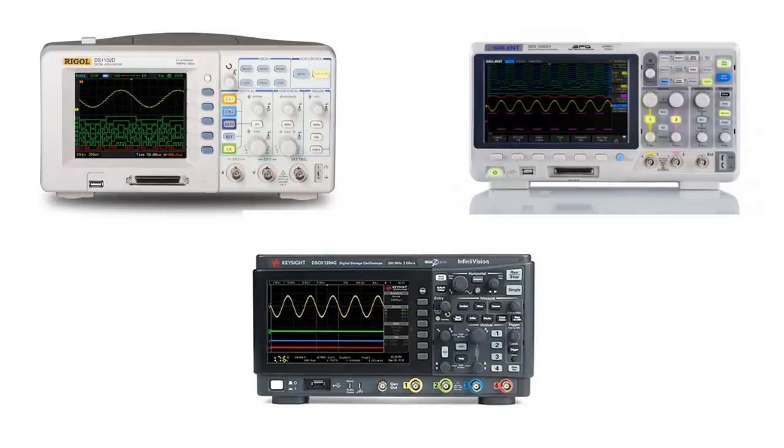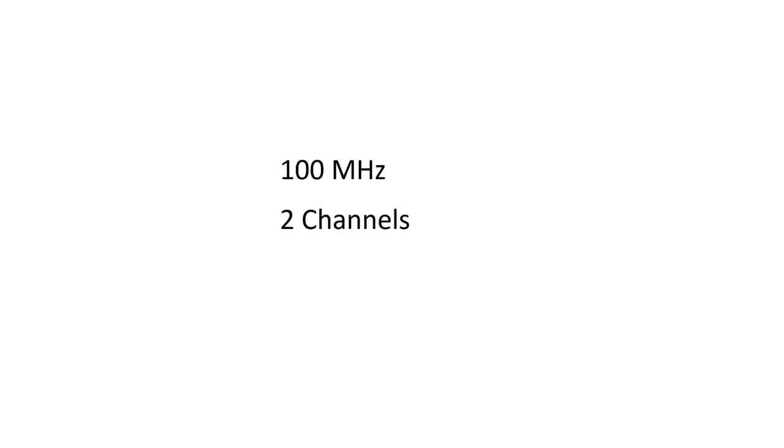But which bench oscilloscope is right? First, stick with one of the main brands: Keysight, Rigol, or Siglent. For a maker, 100 MHz usually is good enough. And two channels are also okay. More channels sometimes can help with complicated problems, higher frequency only if you plan to do some high-frequency stuff.